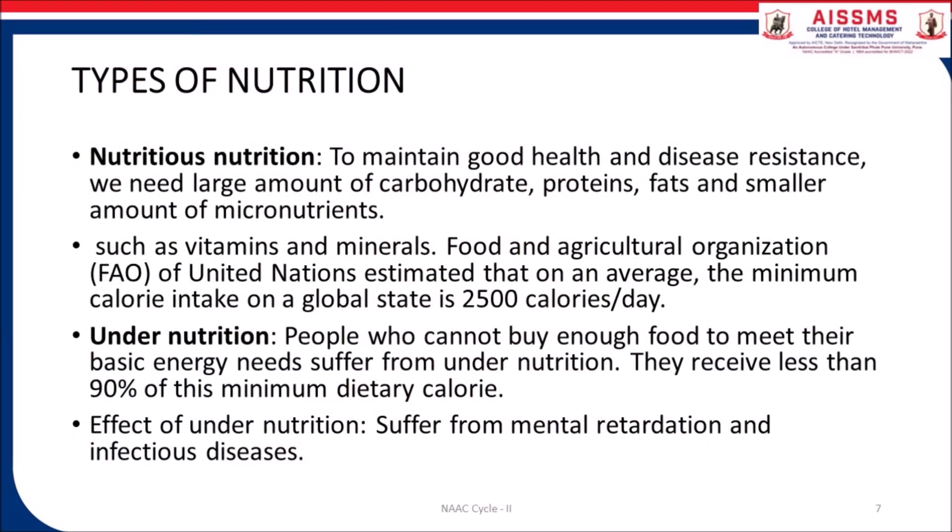Let us see the types of nutrition. First, nutritious nutrition — to maintain good health and disease resistance, we need large amounts of carbohydrate, protein, fat and smaller amounts of micronutrients such as vitamins and minerals. The Food and Agriculture Organization of United Nations estimated that on an average, the minimum calorie intake on a global scale is 2500 calories per day.